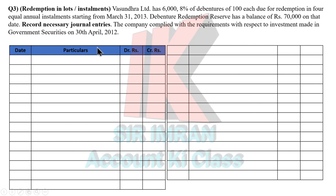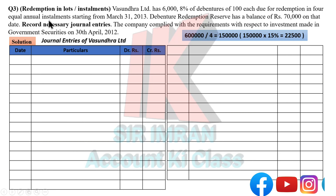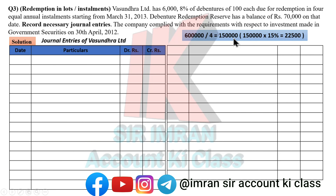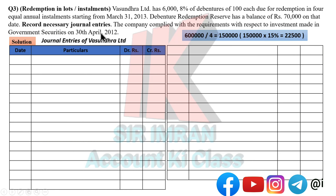Let's look at the calculation. Rs. 6 lakhs divided by 4 installments = Rs. 1,50,000. DRI is 15% of Rs. 1,50,000 — this is the difference from lump sum where you'd take 15% of Rs. 6 lakhs directly. In the installment method, the first installment DRI = Rs. 22,500. This entry comes first since you have to do it one year earlier.